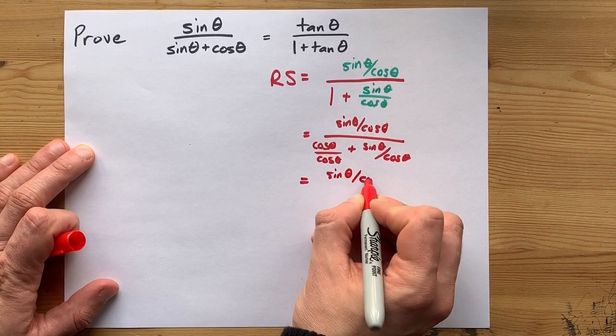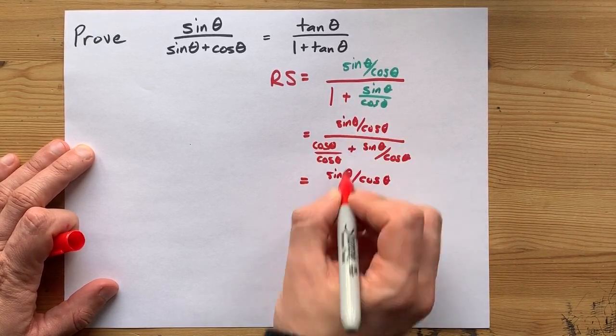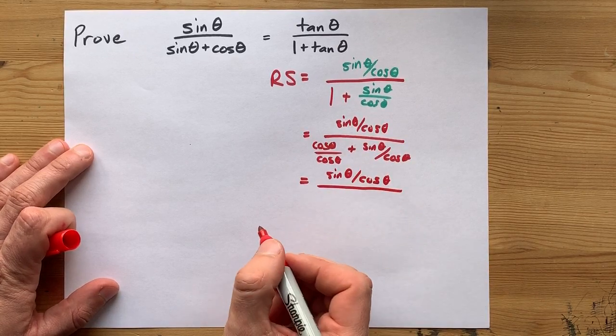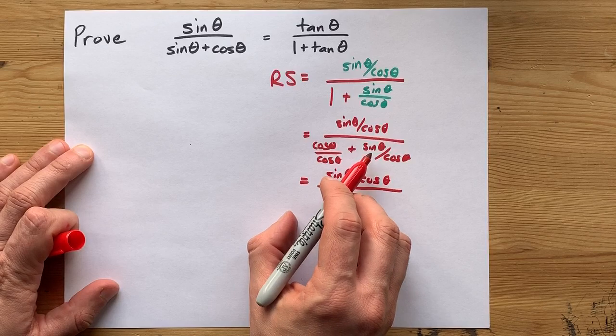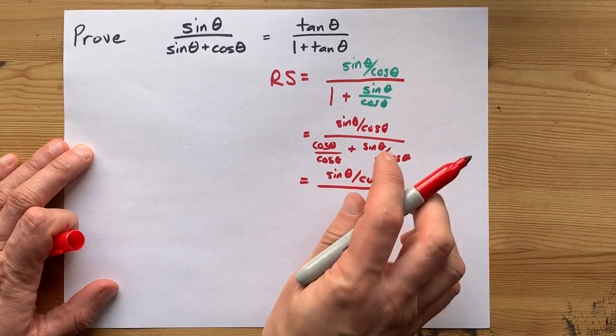I have sine theta over cos theta on the top of my mega fraction, and on bottom, I have something over cos plus something over cos. Common denominator. Check.